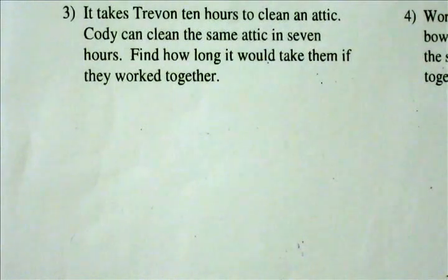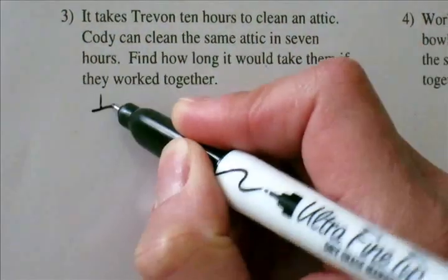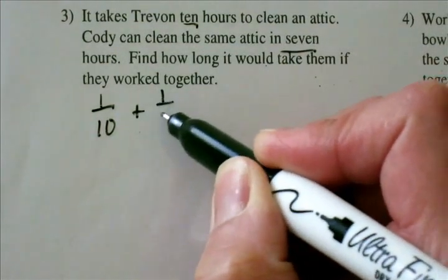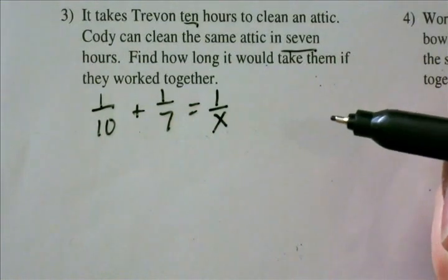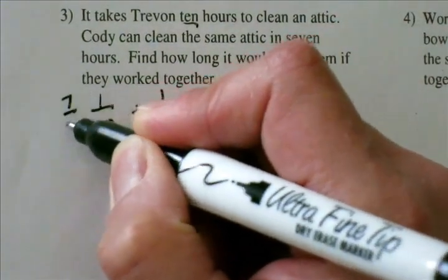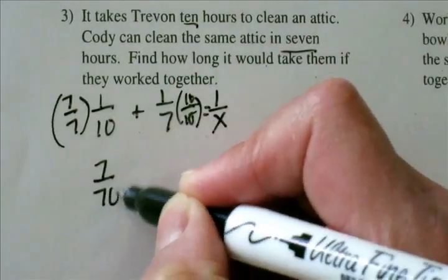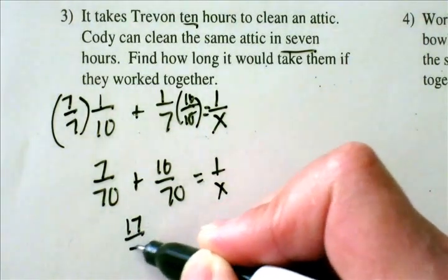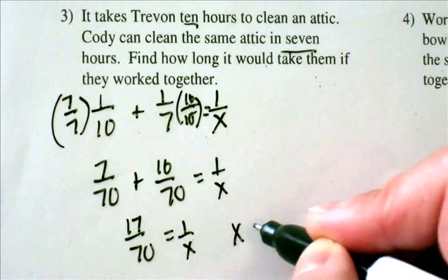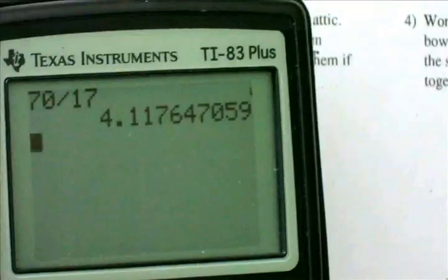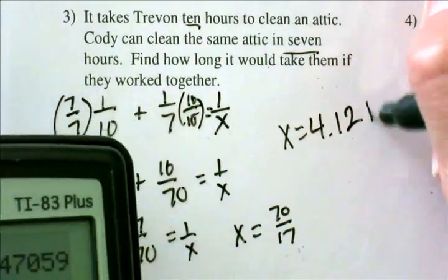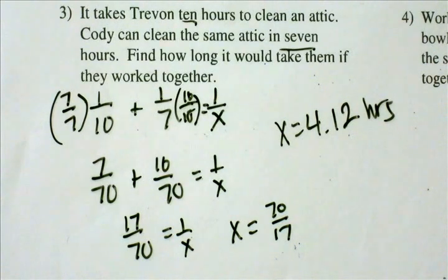Moving on to problem 3: it takes Trevin 10 hours to clean the attic. Cody can clean the attic in 7 hours. Find out how long it would take them if they worked together. Trevin can do it in 10 hours, Cody can do the same job in 7 hours. I need a common denominator of 10 times 7, so 7 over 70 plus 10 over 70 equals 1 over x, which gives 17 over 70 equals 1 over x. So x equals 70 divided by 17, which is 4.117 — rounded to 4.12 hours. Looking at the answer sheet, it indeed is 4.12 hours.